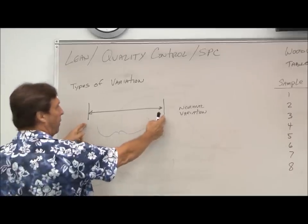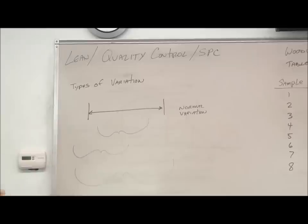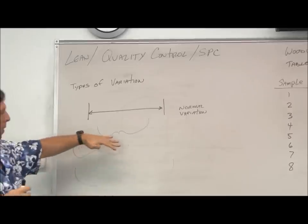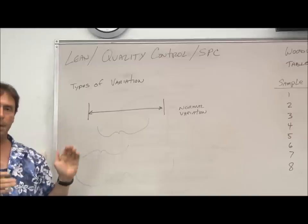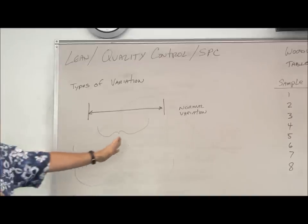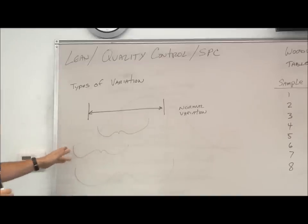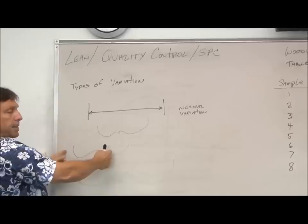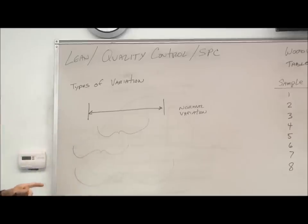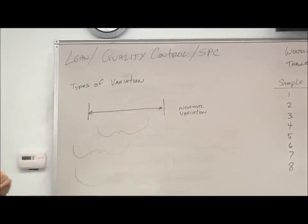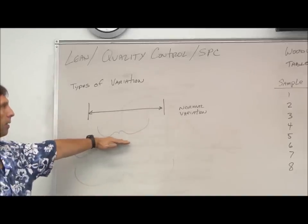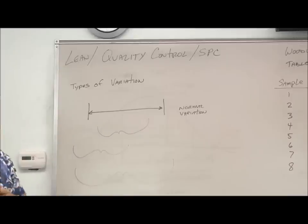So we say our variation has a tolerance, which is normal variation. And what we want is all our products to fall within this normal tolerance. Sometimes the process can skew, so we'll find it's out of range. And sometimes the products are defective because they're outside of the normal. But what we strive to do is get everything within the normal variation.